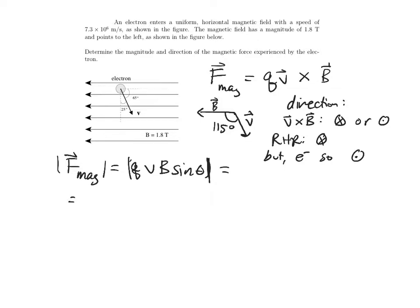The charge, well, it's an electron, so the charge is going to be 1.6 times 10 to the minus 19 coulombs. The velocity of the electron is given in the problem, which is 7.3 times 10 to the 6 meters per second. The magnetic field is 1.8 tesla, and the angle between my vectors V and B is 115 degrees.